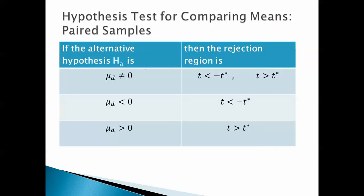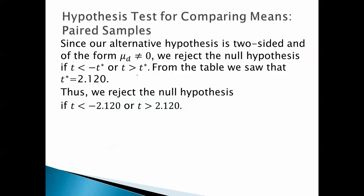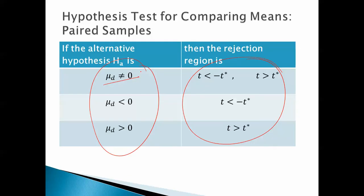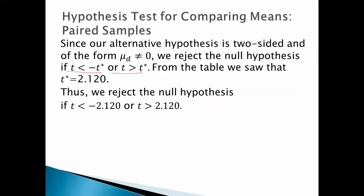If our alternative hypothesis looks like this, the rejection region is going to look like that. Since our alternative hypothesis is two-sided of that form, we reject the null hypothesis if T is less than negative T star, or T is greater than T star. From the table, we saw that T star is 2.120, so we reject if T is less than negative 2.120, or if T is greater than 2.120. Well, T is .8819, so neither satisfies this nor this, so we fail to reject the null hypothesis.